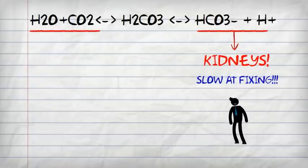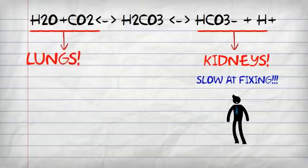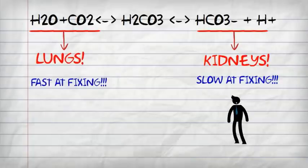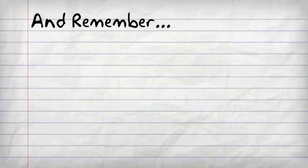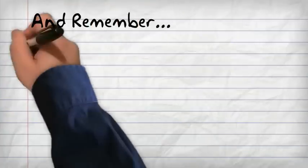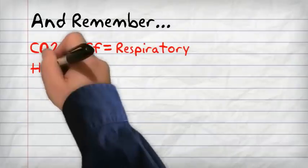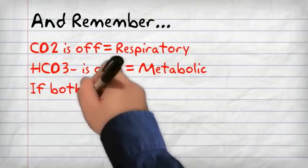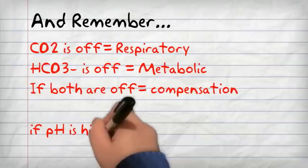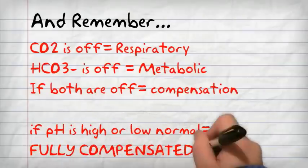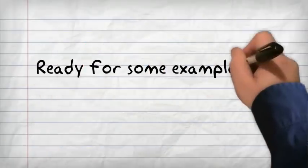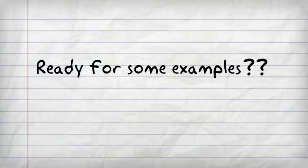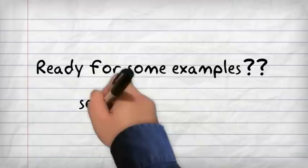Essentially, the kidneys are slow at fixing and the lungs are faster — that's important to keep in mind. Remember: if CO2 is off, it's a respiratory problem; if bicarbonate is off, it's a metabolic problem. If both are off, there's some compensation occurring, and if the pH is at a high or low normal, it means it's fully compensated. If you're ready for some examples, you can watch part two.